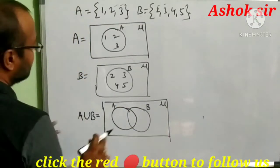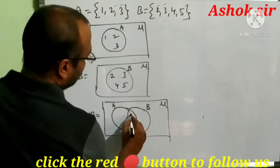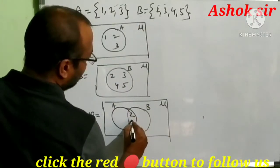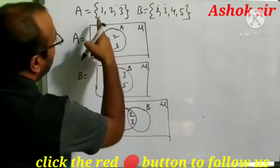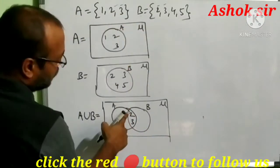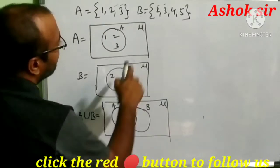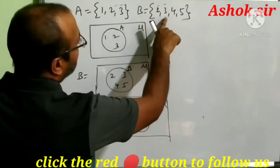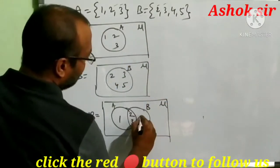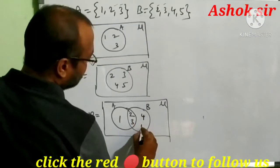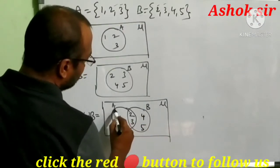A union B: the common elements 2 and 3 are placed in the overlapping area of both sets. A contains 1, 2, 3 — since 2 and 3 are already in the common area, we write 1 in A's exclusive part. B contains 2, 3, 4, 5 — since 2 and 3 are already placed, we write 4 and 5 in B's exclusive part. So A union B covers the total shaded part of both circles.